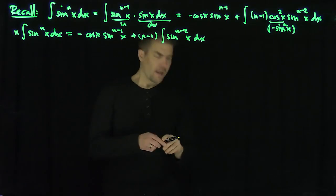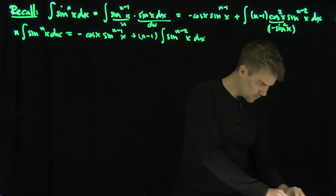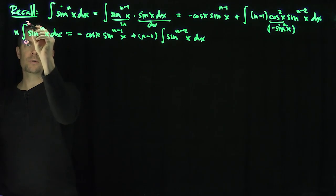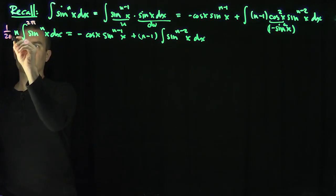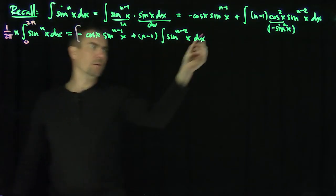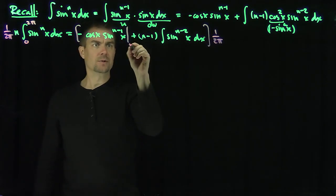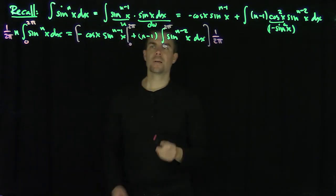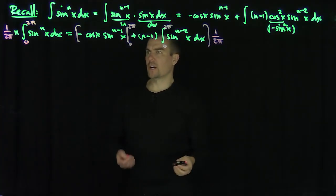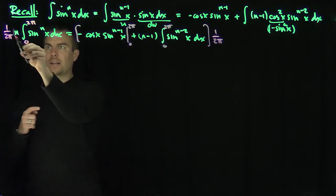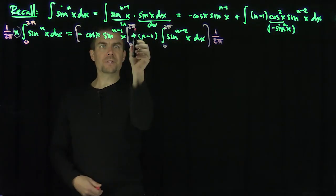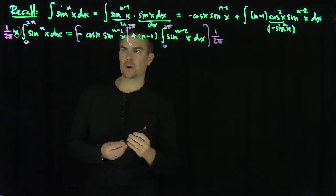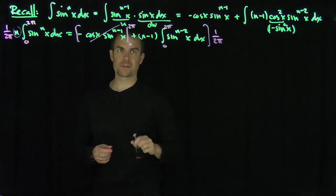Now in particular, what we can do is plug in boundary limits. I'd like to integrate this from 0 to 2π and then divide by 1 over 2π everywhere. The boundary terms are going to vanish because sin(n−1)(x) evaluated at 2π and 0 are both 0, so we can conclude the following.